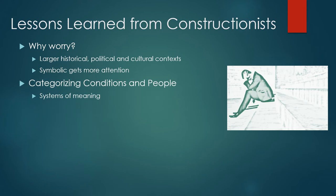Constructionists can give you an idea of the meanings of conditions — how they became called a social problem and how the people categorized within social problems claims came to be categorized that way. All social problems claims categorize conditions — saying this is bad, this is good, this is a problem, this is a solution — and they categorize people: these are victims, these are villains, these are oppressed people, these are people in power. Constructionists, instead of just accepting these categories, can actually uncover how these categories are created and reproduced in our social worlds.